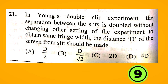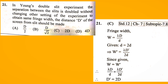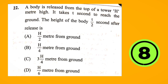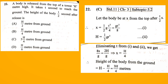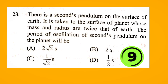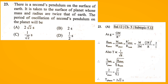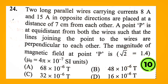Twenty-first MCQ — right option A, Option B. Twenty-second MCQ — correct option A, Option C. Twenty-third MCQ — correct option A, Option C. Twenty-fourth MCQ — correct option A, Option A.